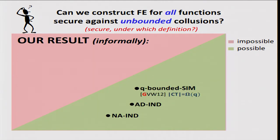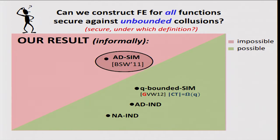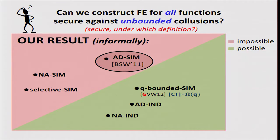As mentioned, you can get the strongest notion of simulation-based definition for Q-bounded collusions. First, we rule out the notion of adaptive simulation-based definition, though this is not a new result — it was actually ruled out in the works of BSW a few years back. Moreover, we rule out weaker notions of simulation-based definition, in particular non-adaptive security, and moreover we rule out selective security and some even weaker notions such as rewinding simulation.